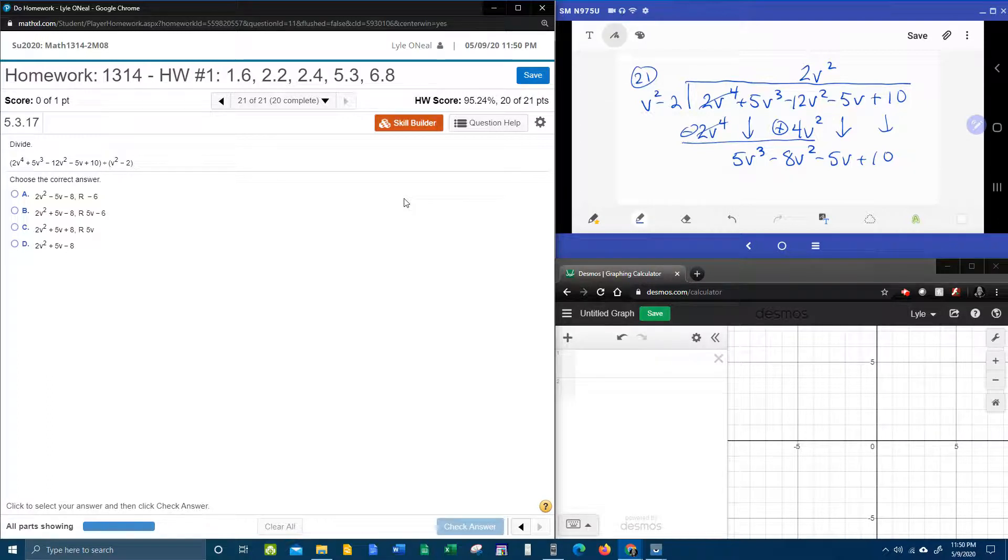And then we're going to rinse and repeat. What is 5v to the third divided by v squared? 5v to the third divided by v squared, that is 5v. So we're going to say plus 5v. See that? Keeping my like terms lined up. And then just like we did the 2v squared, we're going to distribute the 5v to the divisor. 5v times v squared, that is 5v to the third. And then 5v times negative 2 is negative 10v. Remember what I said about keeping the like terms lined up? So be careful where you write those.